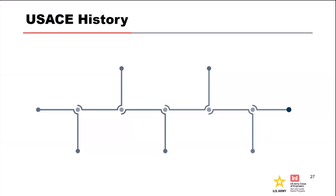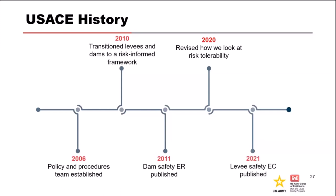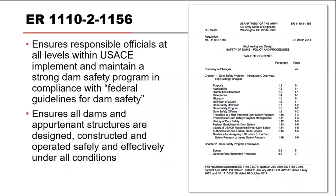Talking about how the Corps guidelines were developed — similar to what Doug described for FERC — in 2006 a team was put together to write our policy and guidelines, both internal and external to the Corps. It took about four years and was really done writing around 2010, then published in 2011 as the Dam Safety Engineering Regulation. It's been basically unchanged since, with some minor updates. We revised how we look at tolerability in 2020, and in 2021 finalized the levee safety policy in an engineering circular — so it took a solid 15 years from when we started thinking about it to having policies for both dams and levees in the Corps.